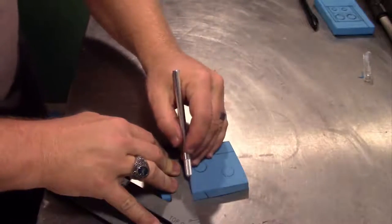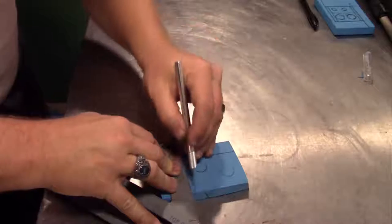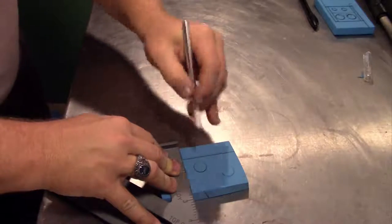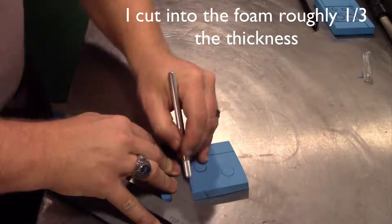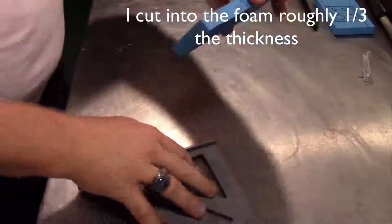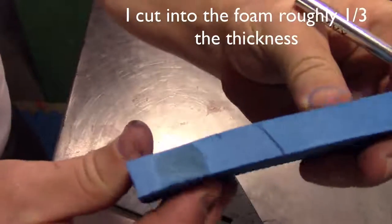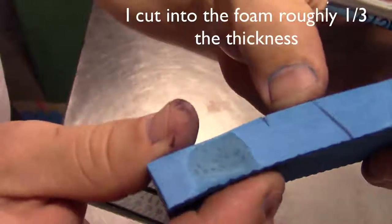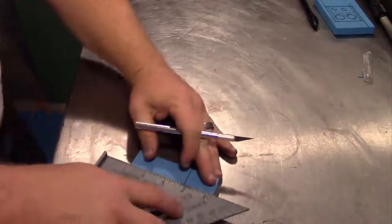So we're just going to hold that in place. And this one is going to be a cut all the way through. Now all I'm doing is lightly scoring. I'm going a third down right there to cut into the foam. Now we've got that.